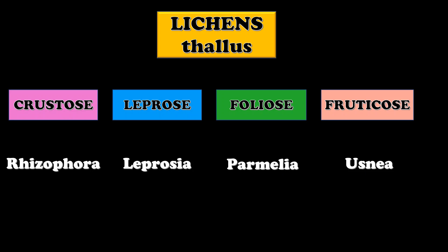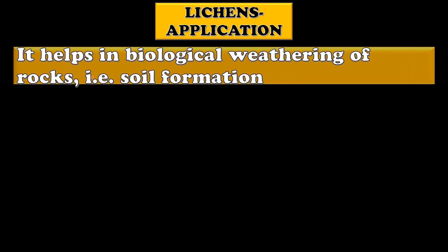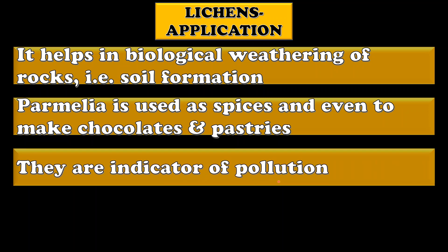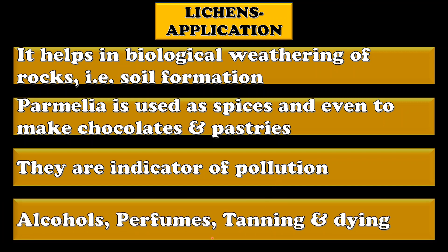These lichens have very diverse applications. They help in biological weathering of rocks, that is, they help in soil formation. Parmelia is used as spices and even to make chocolate and pastries. These lichens are indicators of pollution. They are also used widely in alcohol, perfumes, dyeing, and tannin industries.